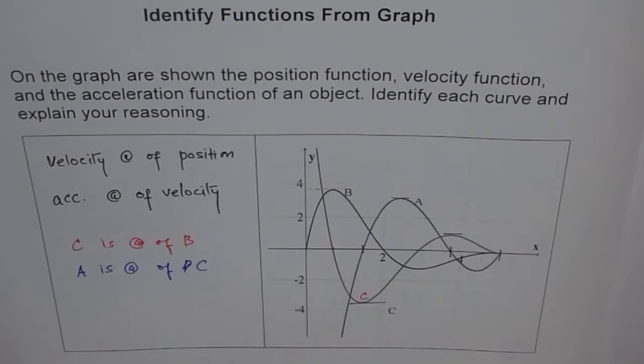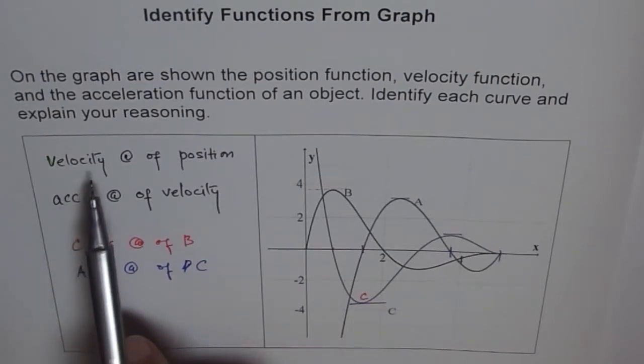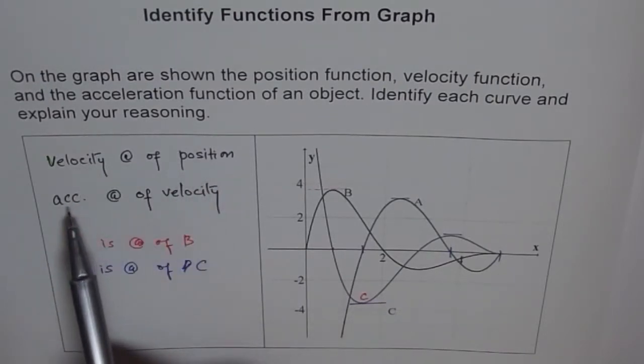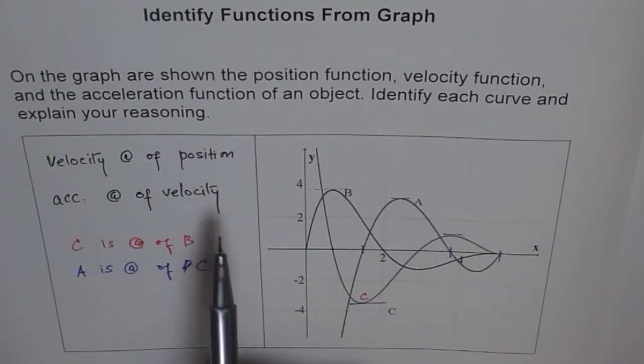So now we can correlate our answers. We say C is rate of change of B, and A is rate of change of C. That means what? Velocity is rate of change of position, and acceleration is rate of change of velocity. So from here, straight away, we get if we assume C as the velocity, does it make sense?